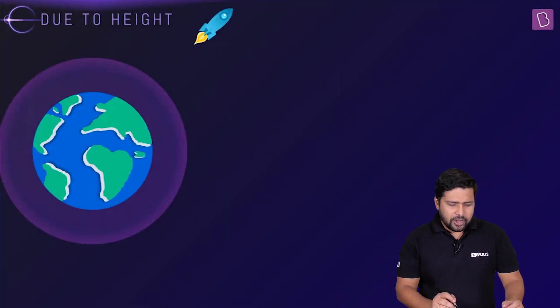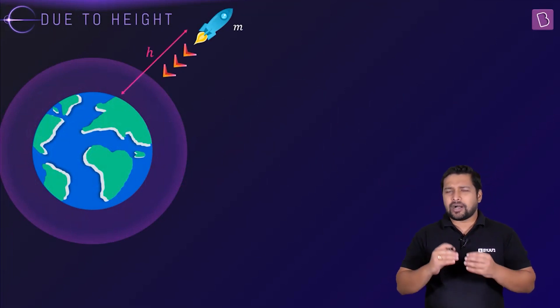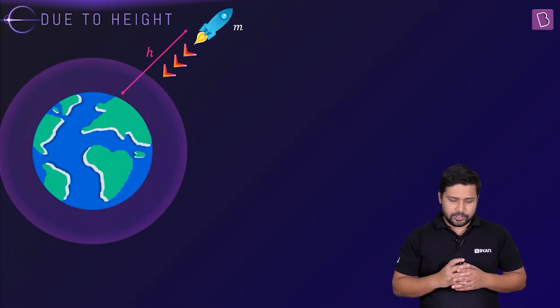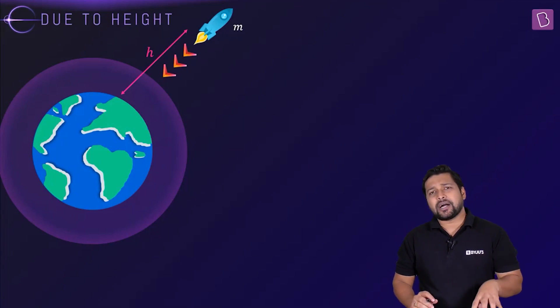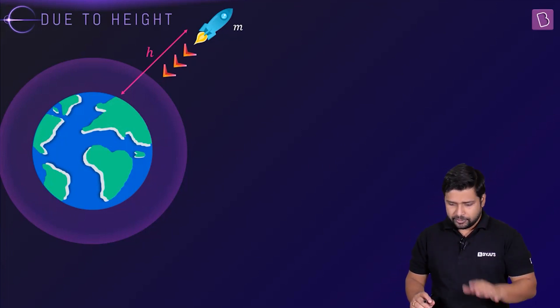Let us say that you have a body and you have taken this body at a height of h from the surface of the earth. We need to find out the expression of the acceleration due to gravity at this height.